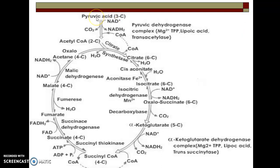Here pyruvic acid along with acetyl-CoA gets converted into citric acid with the help of the enzyme pyruvate dehydrogenase complex. This citric acid is converted into cis-aconitate, and then cis-aconitate in the presence of aconitase is converted into isocitric acid. This isocitric acid in the presence of enzyme isocitrate dehydrogenase gets converted into oxalosuccinic acid.